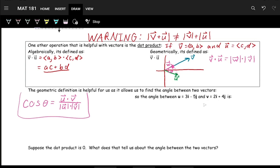So let's find the magnitudes. The magnitude of u is equal to the square root of 3 squared plus negative 5 squared, which gives us the square root of 34. And then the magnitude of v is the square root of 2 squared plus 4 squared. And this is equal to the square root of 4 plus 16, which is 20. So these are the magnitudes of each of the vectors.